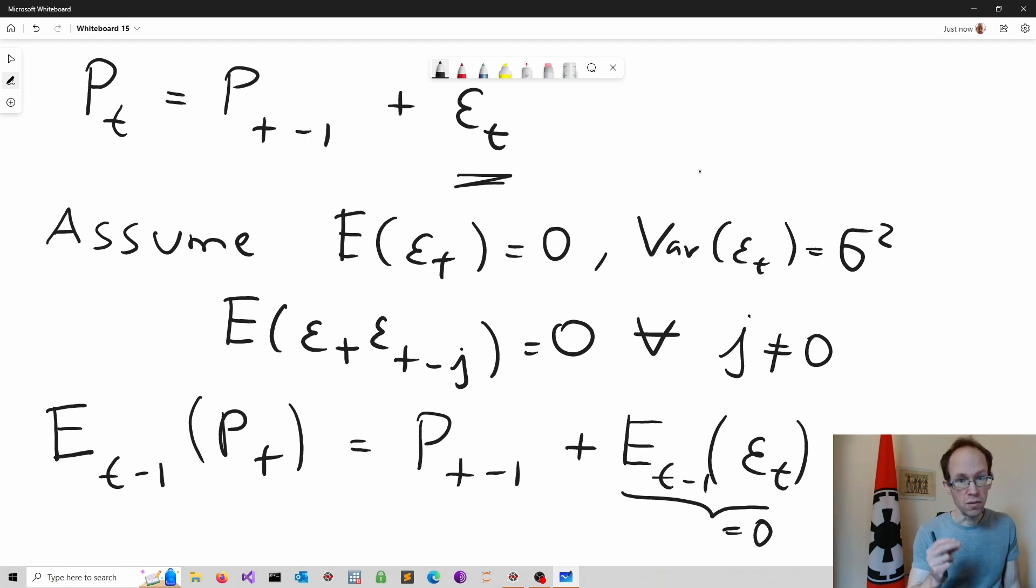Observing the previous share price, Pt-1, tells you everything you need to know about future share prices. This basically means that share prices are fully revealing, and this implies so-called information efficiency in a strong sense. So every information that is available at this point in time is already reflected in the share price observed.